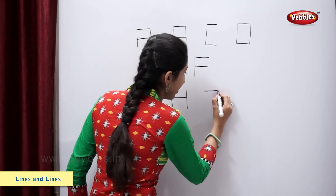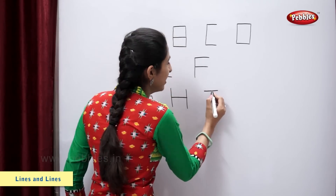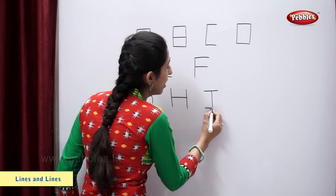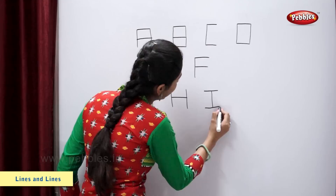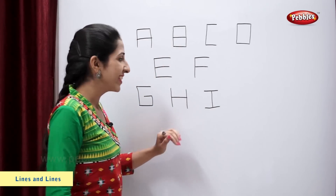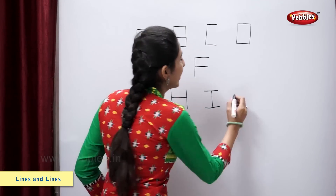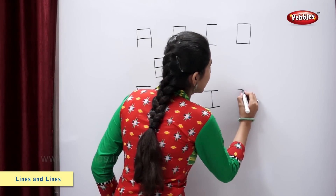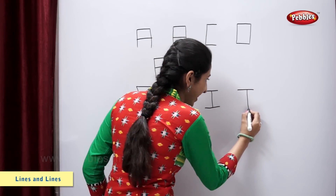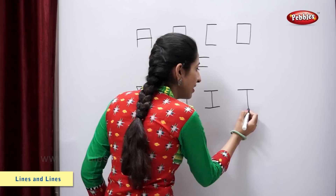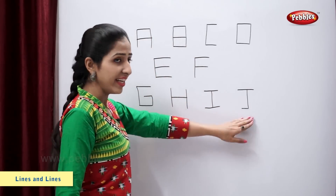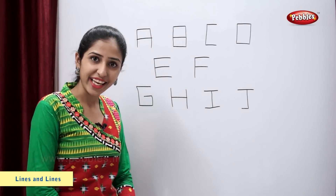Sleeping line, standing line, sleeping line — letter I. Sleeping line, standing line, sleeping line — letter J.